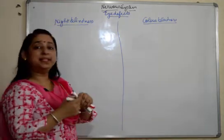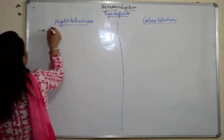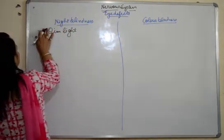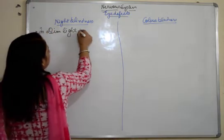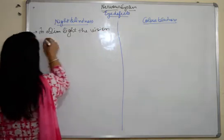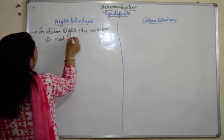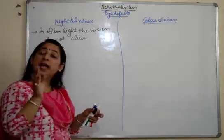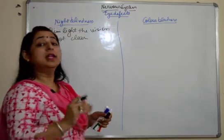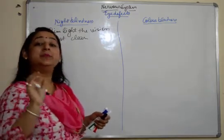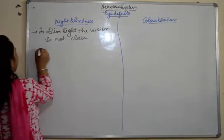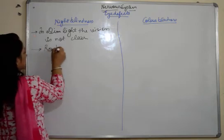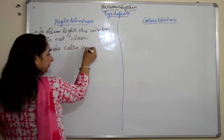First of all, night blindness. What is basically happening in night blindness? In dim light, the vision is not clear — meaning if light is less, it does not come clearly. We have studied that rod cells are responsible for seeing in dim light. So this means that rod cells are not working properly — the rod cells are defected.